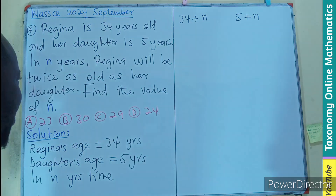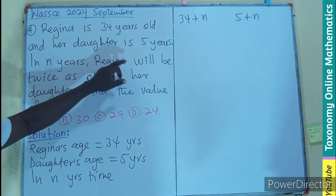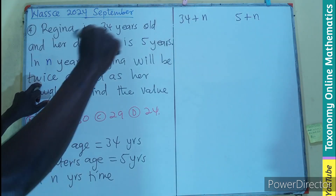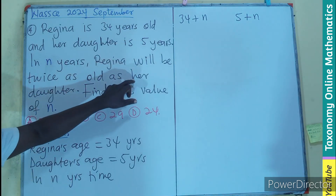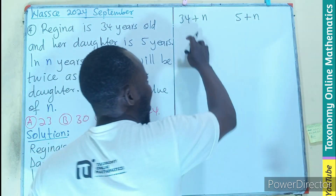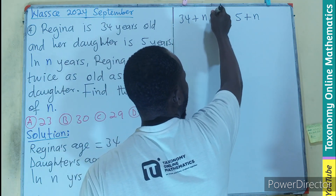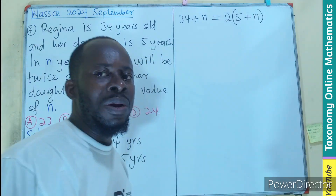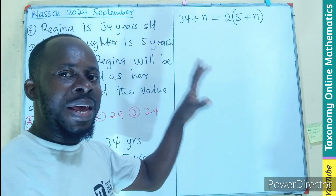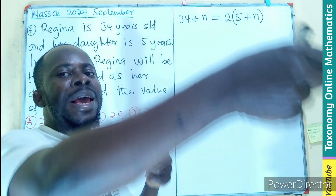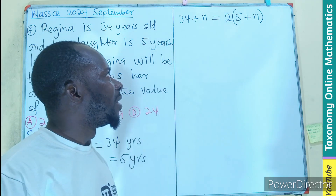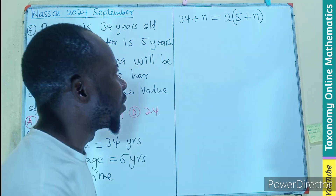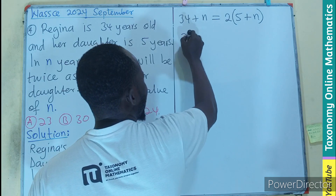In that n years to come, they say Regina's age will be twice as old as the daughter. So Regina's age equals two times the age of the daughter in those years to come. This becomes a simple equation which involves a bracket to be expanded.